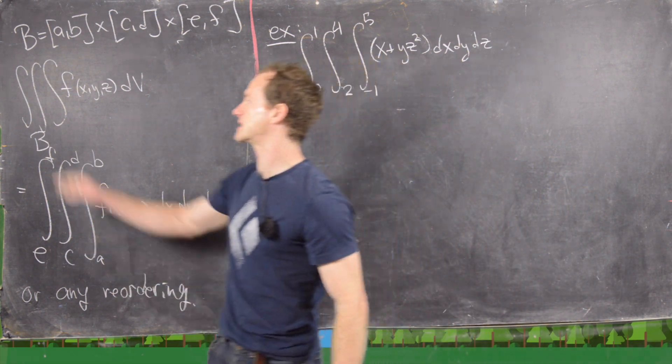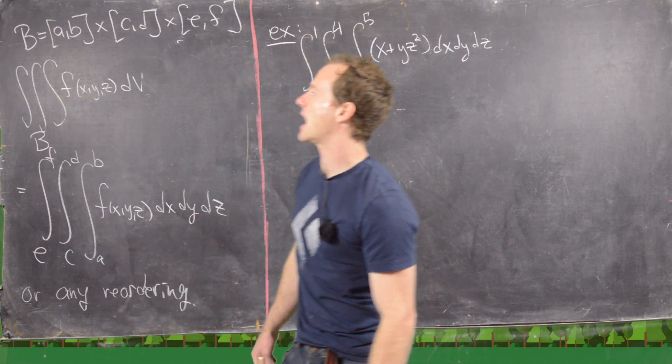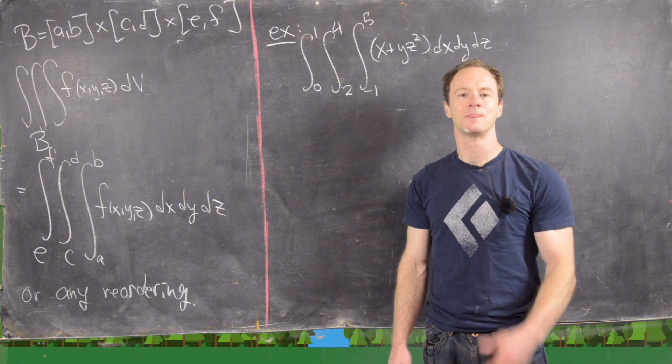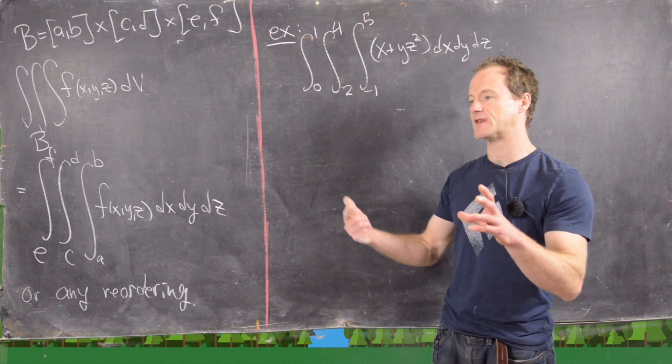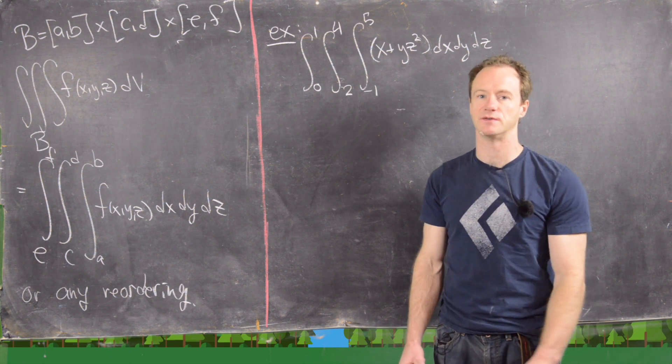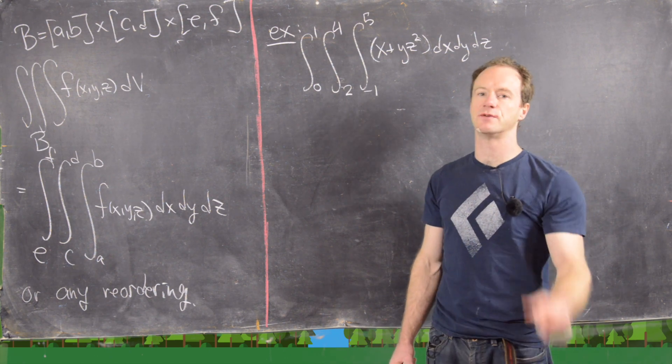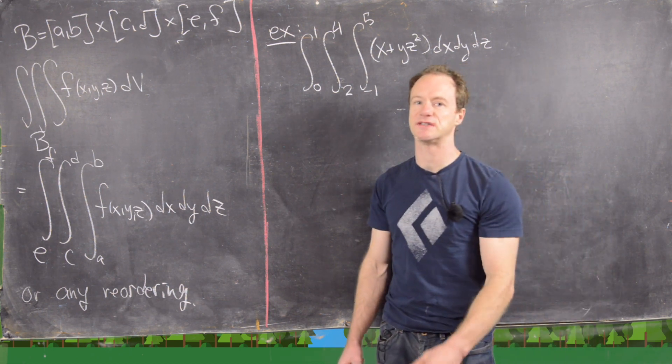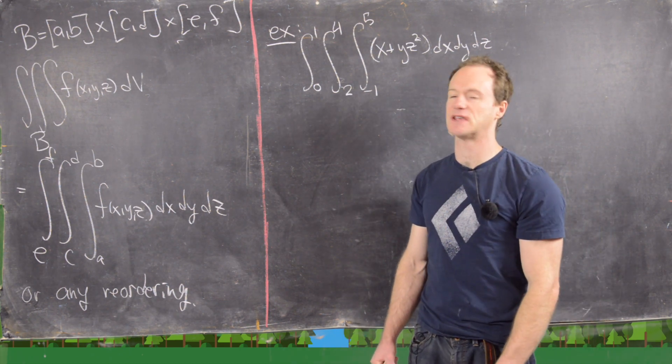So let's say we've got this rectangular box A, B, cross C, D, cross E, F. So what I mean by that is you've got this box: the smallest x value is A, the largest x value is B, smallest y value is C, largest y value is D, smallest z value is E, largest z value is F.